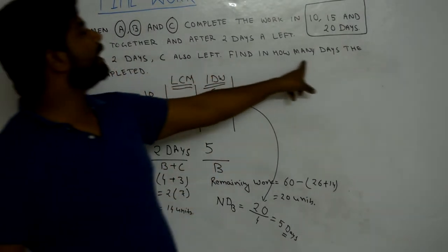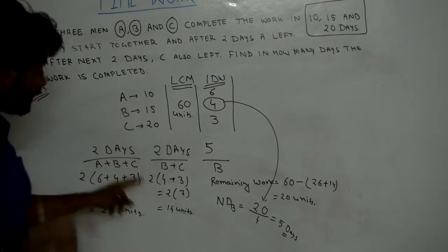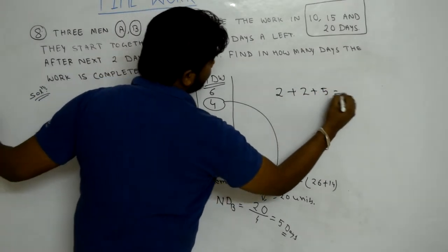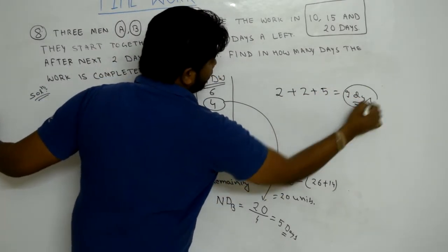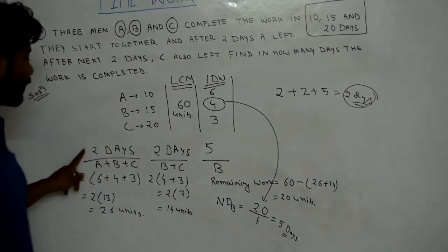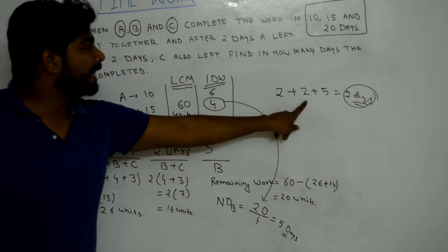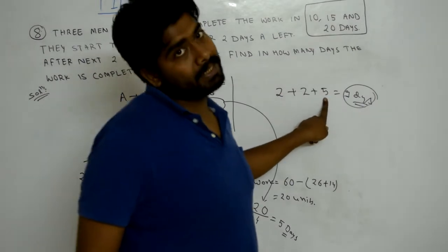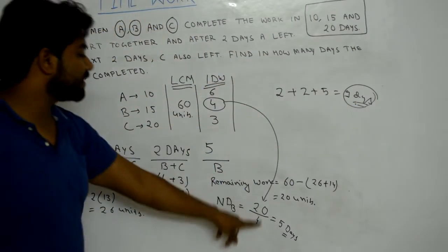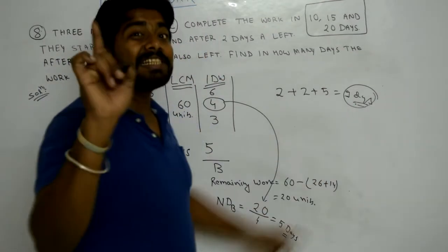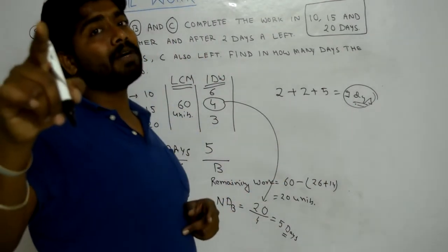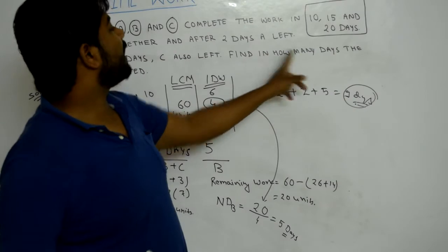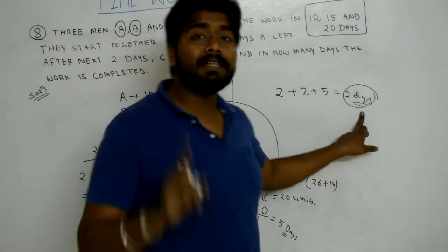The question asks: in how many days is the work completed? The answer is 2 plus 2 plus 5, which equals 9 days.